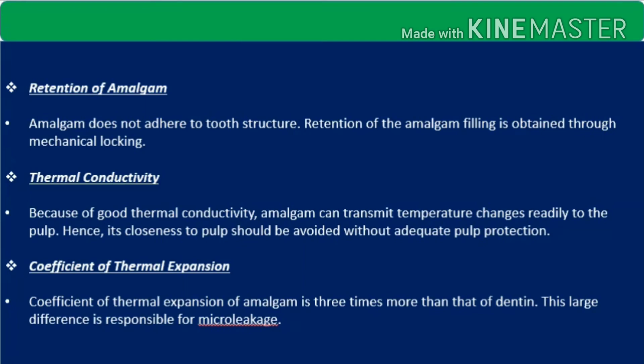According to remaining dentine thickness values, you have to decide whether varnish is sufficient, whether a base is needed, or whether a liner and base combination is required to protect the pulp. The coefficient of thermal expansion of amalgam is three times more than that of dentine, and this difference is responsible for micro leakage.